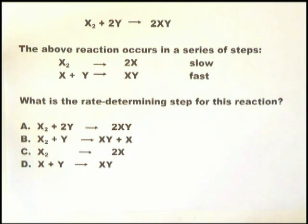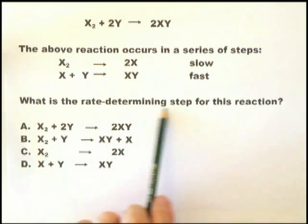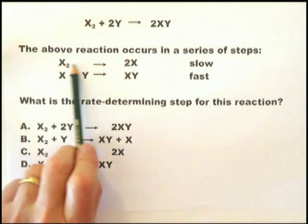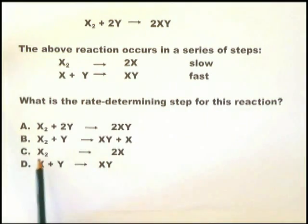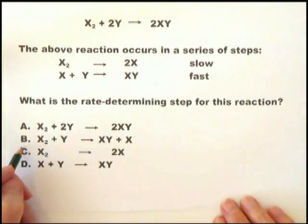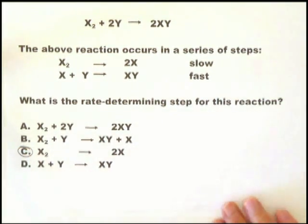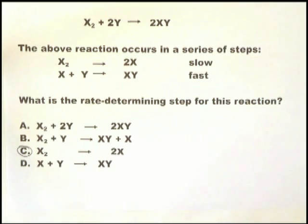The examiner is simply checking whether you understand the meaning of the rate-determining step and whether you can see it when it's put in front of you. The rate-determining step is the slowest step, which is that one. X2 goes to 2X. And here it is. X2 goes to 2X. Why look at any others? That is the rate-determining step. The slowest.